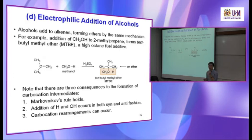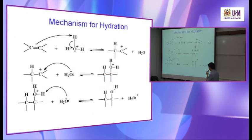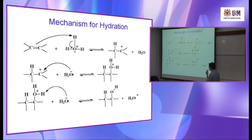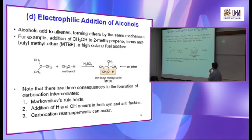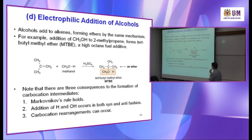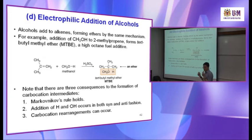The methanol or the alcohol acts as a nucleophile. The first step is the same: generation of the carbocation. The next step — the alcohol attacks the carbocation. Then the water molecule will remove the H from the alcohol. So the mechanism is similar to the hydration. Note that there are three consequences to the formation of the carbocation intermediate. First, the Markovnikov rule holds — that's why it's the same as the hydration reaction. Second, addition of H and OH occurs in both syn and anti-fashion; this is true for the hydration reaction and true for the addition of alcohol.